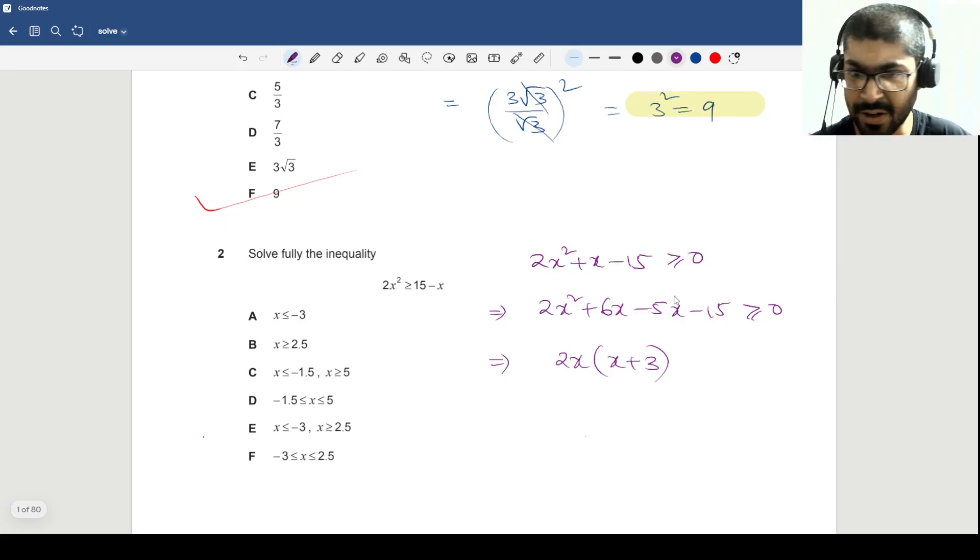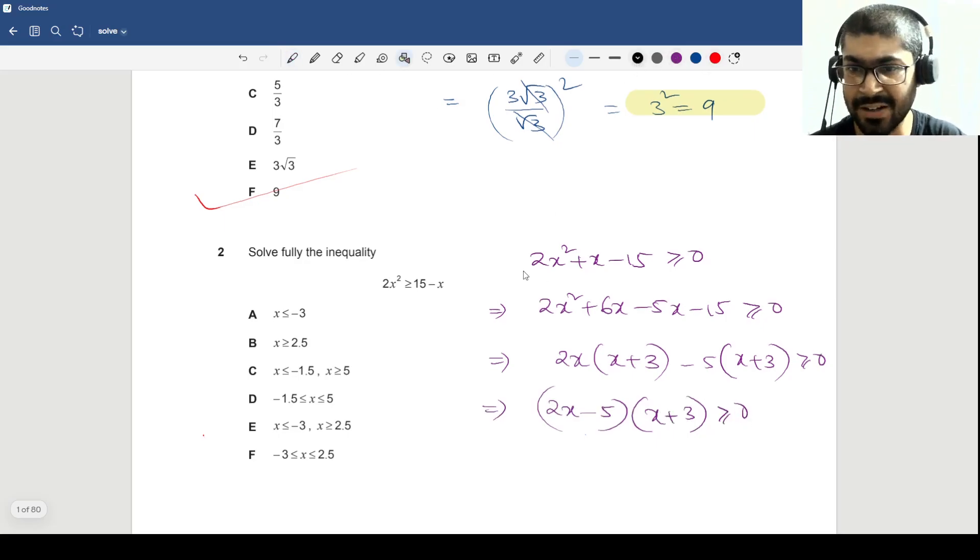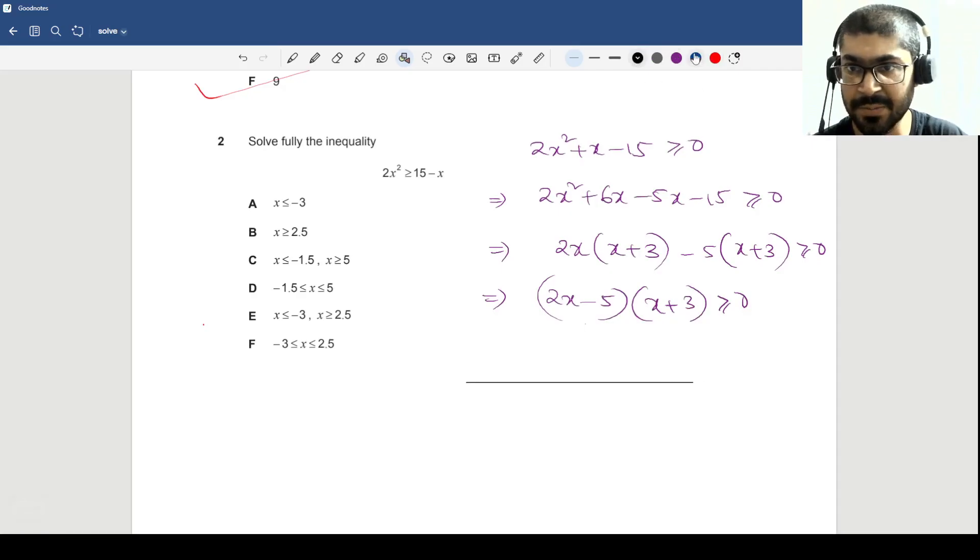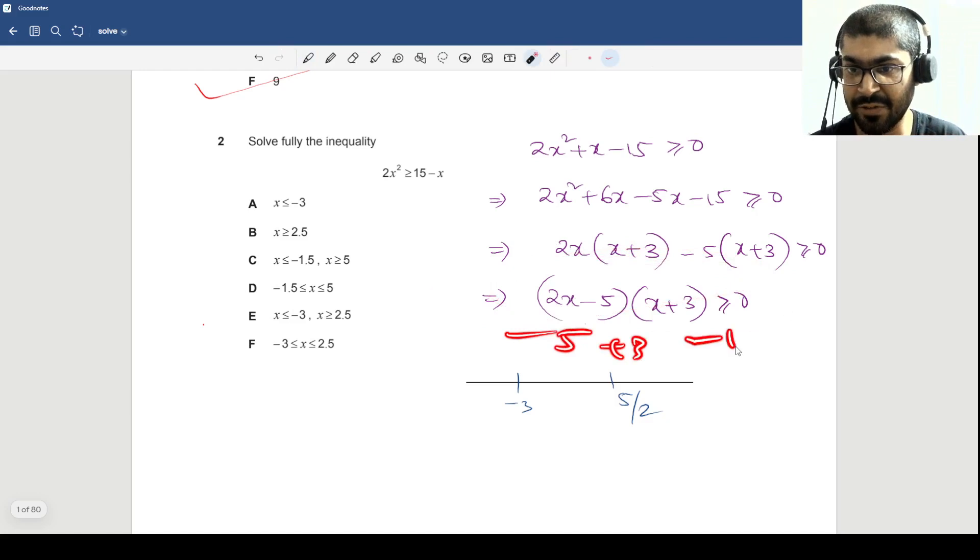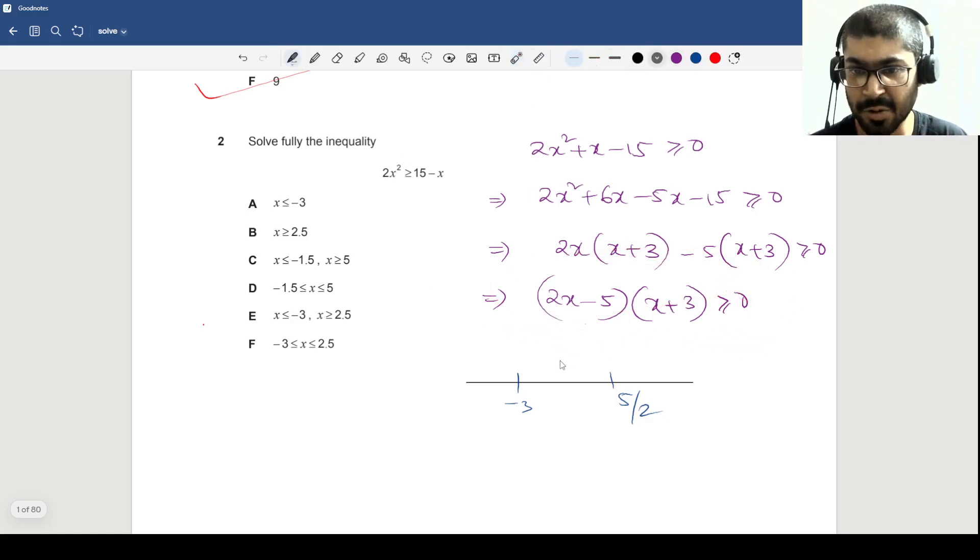So that will give you 2x into x plus 3. Minus 5 into x plus 3 greater than or equal to 0. So this is basically 2x minus 5 into x plus 3 greater than or equal to 0. Now we will draw the sign diagram as we usually do. There is a very standard workflow for these type of problems. So what are the roots here? The roots will be -3 and 5 by 2. So -3 and 5/2. Now we will check where this is greater than or equal to 0. So take 0. If you put 0 here in this equation, test with 0.